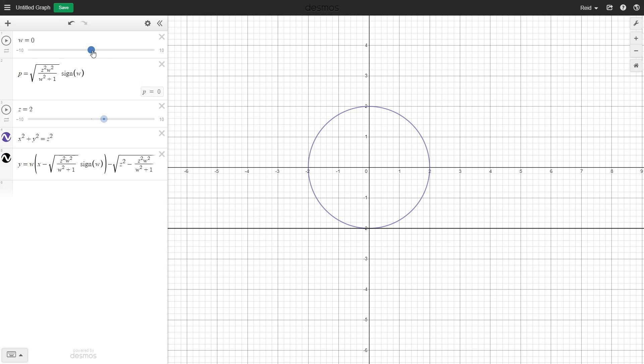Here in Desmos, I set up a quick demo of the circle and the line we just solved for. I have the slope as a separate slider variable, and as I vary it, the line sweeps along the bottom half of the circle.